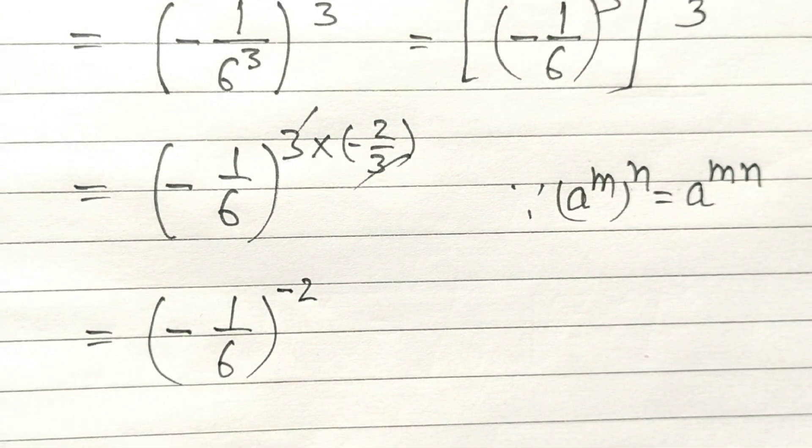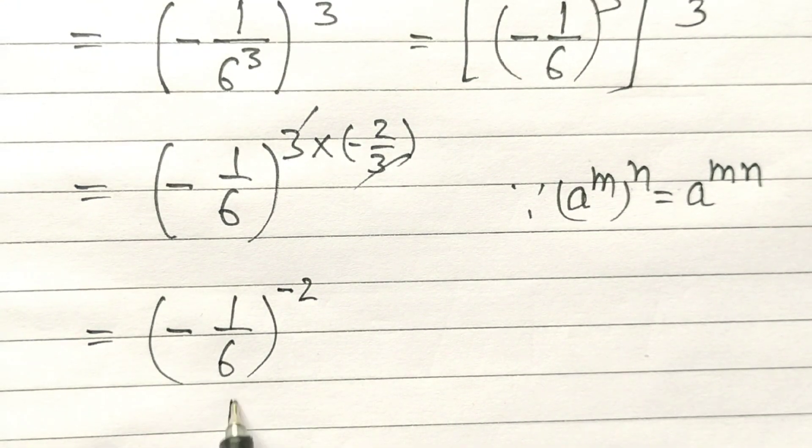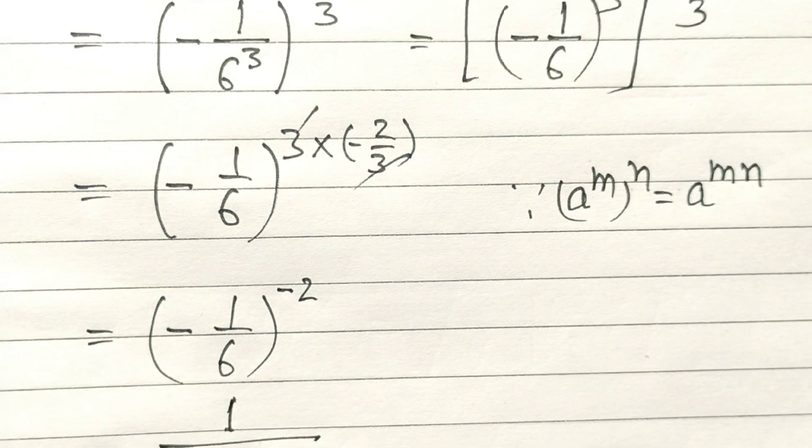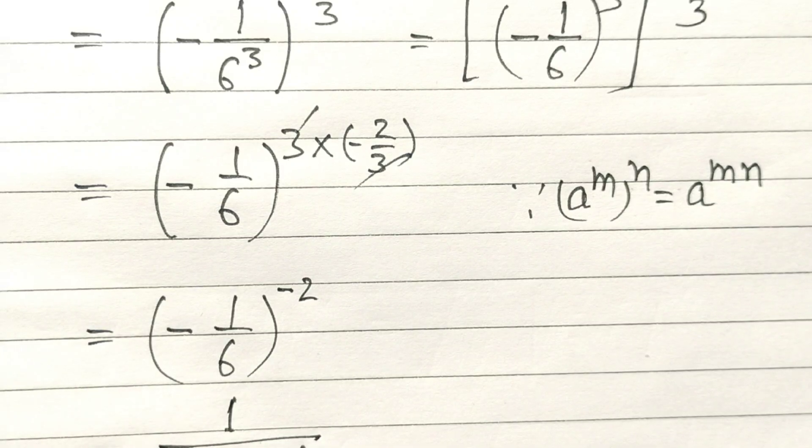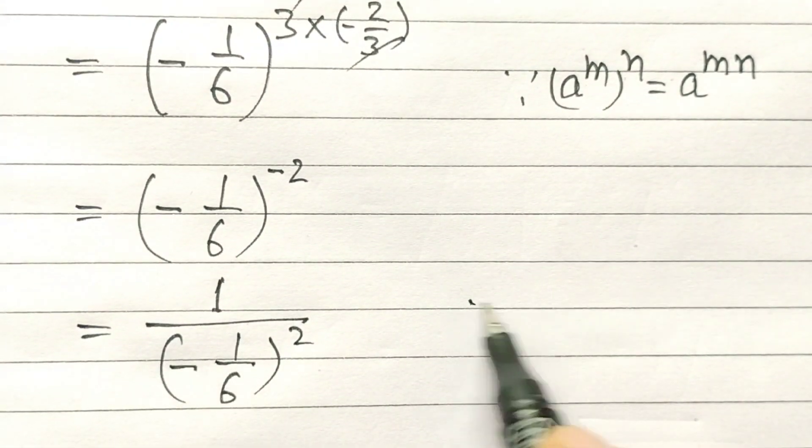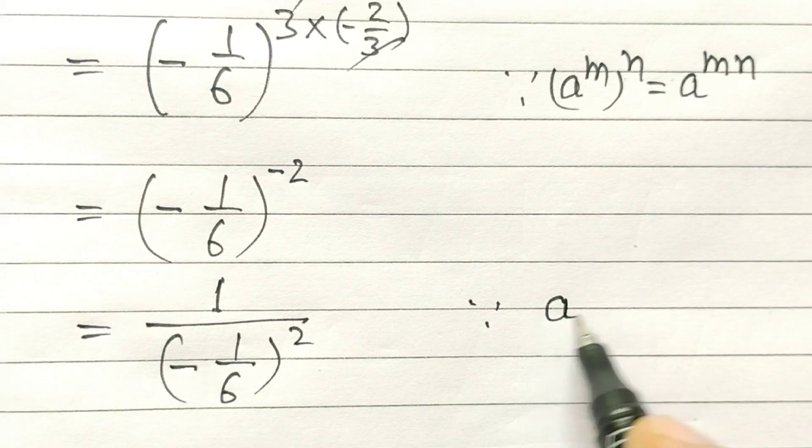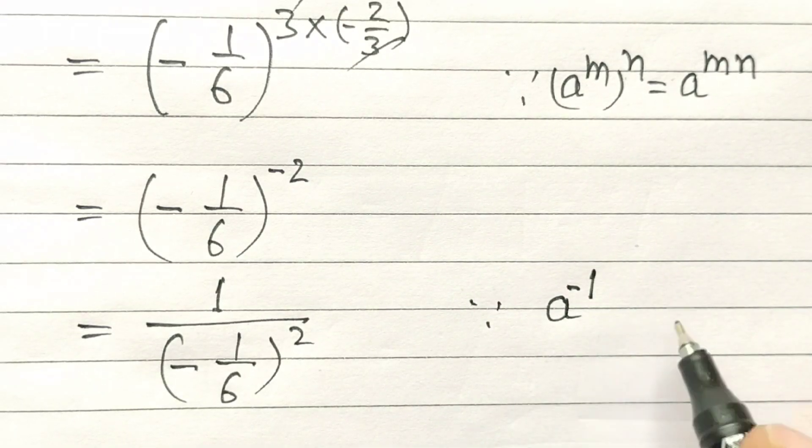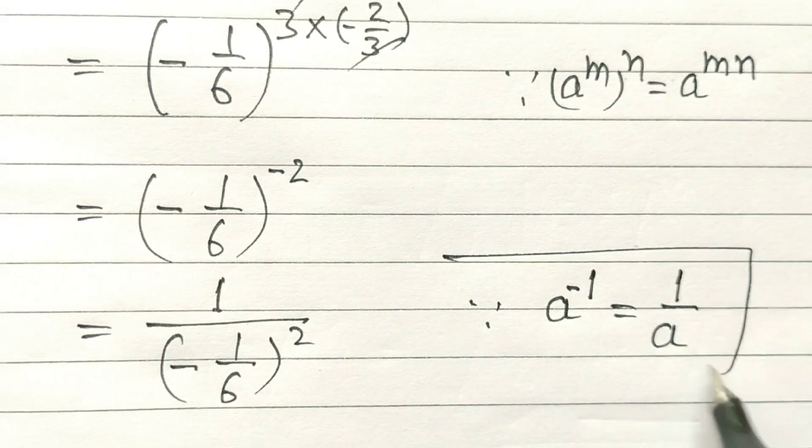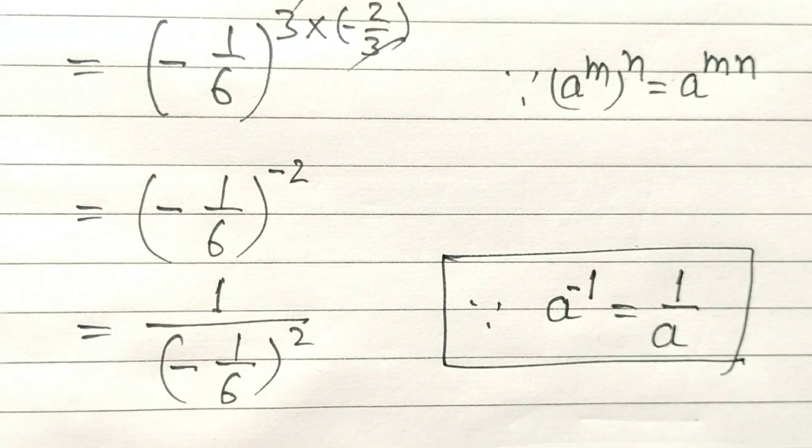Now, this becomes 1 over (-1/6)^2, because a^(-1) can be written as 1 over a.